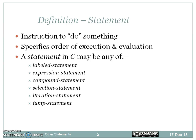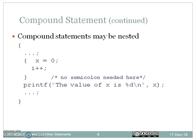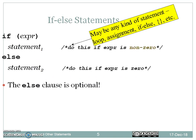Now we will see what are the conditional control statements in C programming language. A compound statement is a sequence of statements surrounded by flower braces. Any number of statements enclosed within flower braces is called a compound statement in C. The reason is that we can group together statements in loops, if-else statements, and functions. Compound statements may be nested, meaning we can place one compound statement within another.